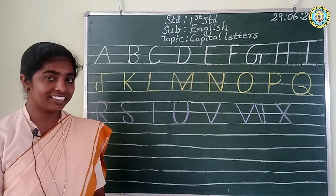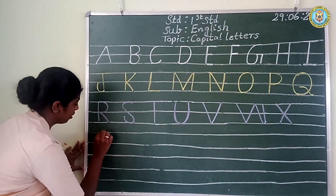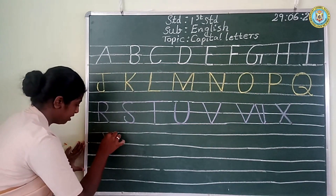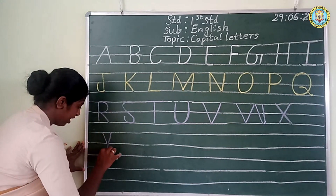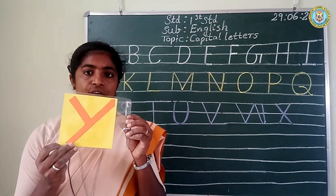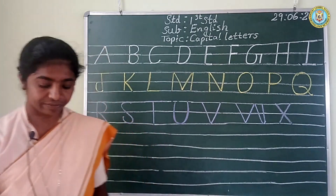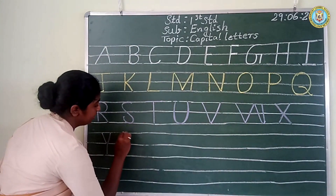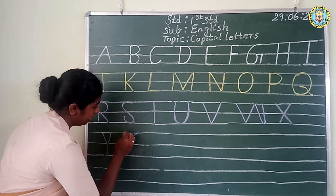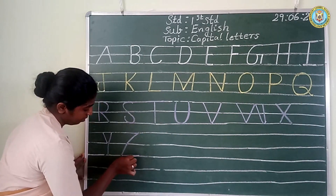Which is the next letter, children? It is Y. Look at the board. Slanting line and another slanting line and the straight line. It is Y. Y. Y for yak. Next. The sleeping line on the top and the slanting line and another slanting line and the sleeping line on the bottom. Z.